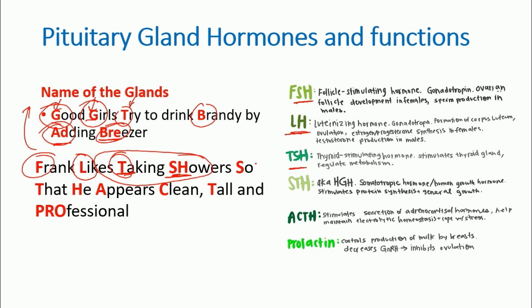The fourth hormone is STH — somatotrophic hormone — which acts on body cells, signaling them to grow and divide. Then A-C-T-H — adrenocorticotrophic hormone — which acts on the adrenal gland. The last one is PRO — prolactin — which acts on the breasts and stimulates them to produce milk.